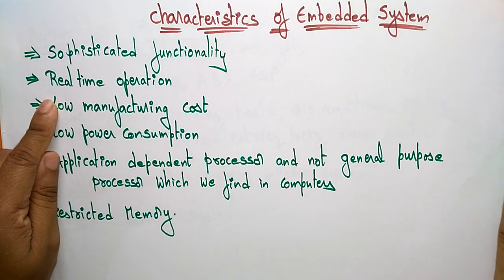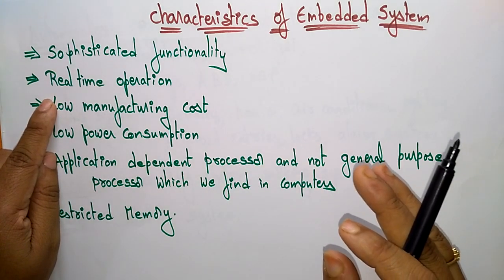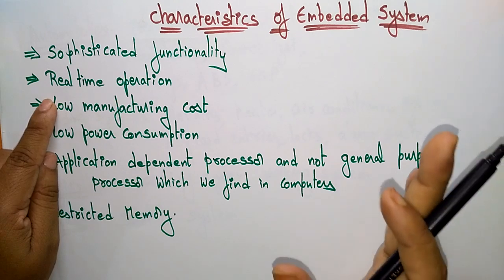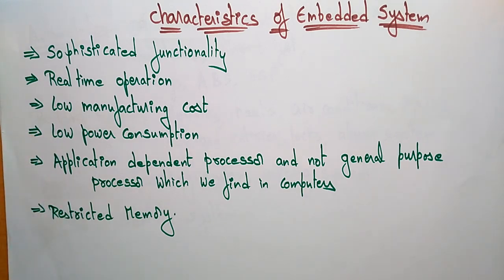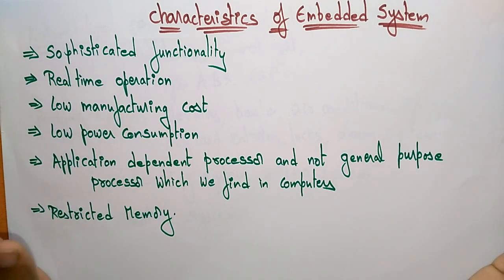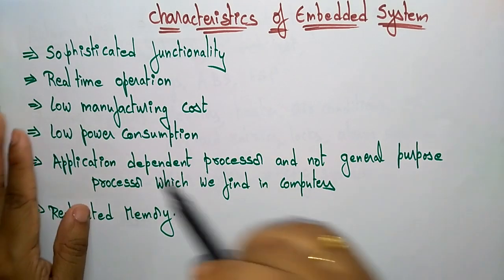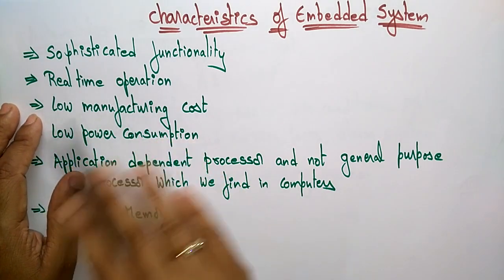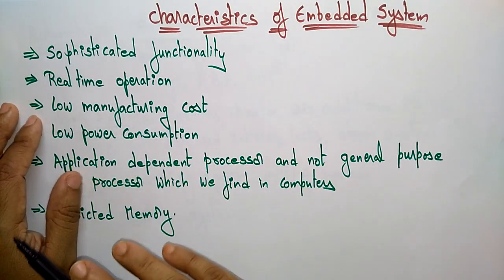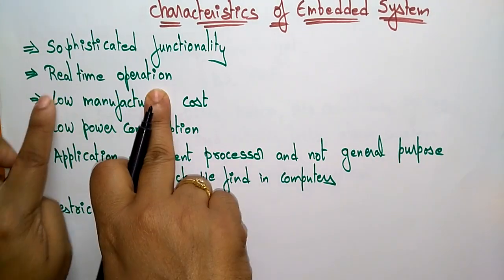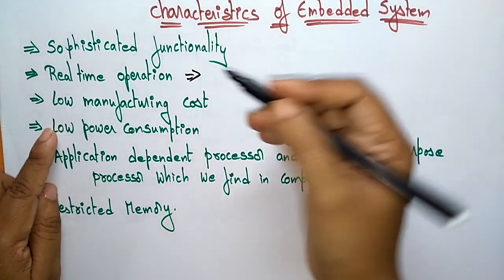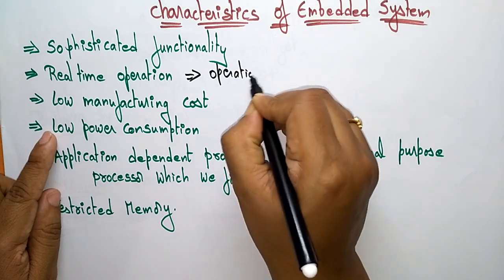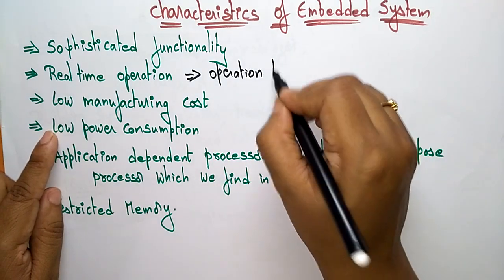Coming to real-time operations — not all embedded systems satisfy real-time operations. Embedded systems are mainly designed to complete whatever task has to be completed within a particular time. The real-time operation means the operation has to be completed by a deadline — whatever operation is taking place, that operation has to be completed by the deadline.